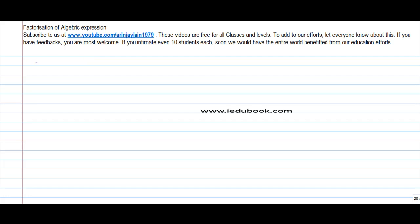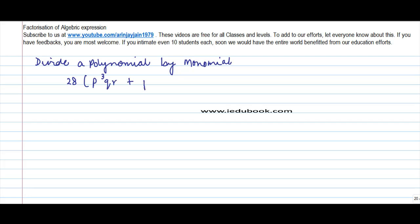Let's take a problem where we divide a polynomial by a monomial. Suppose you are told to divide 28pqr divided by 7pqr. Now there are two ways by which you can do it. The first one is through the common factor method. Let's take the common factor route.